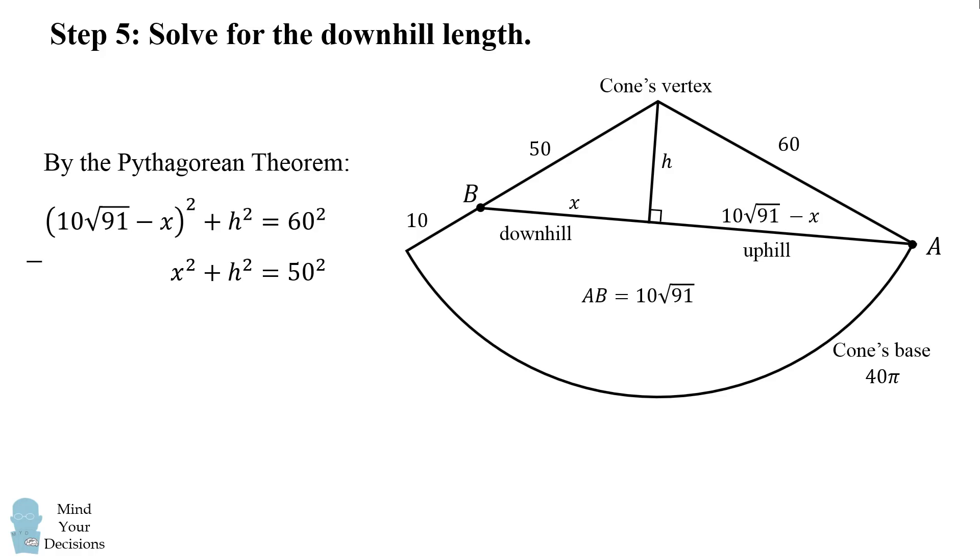Now there's a neat trick. We can subtract the second equation from the first and we'll cancel out the h squares and we'll also cancel out the x squares.